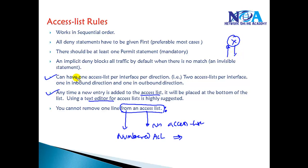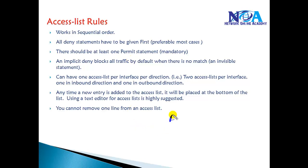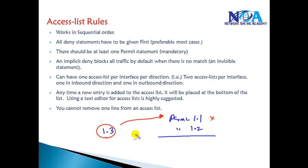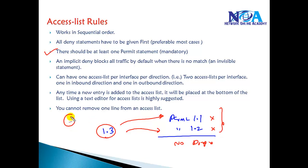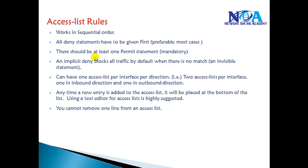We can have only two ACLs per interface — one applied inbound and one outbound. There is also the rule of implicit deny: if no statement matches a packet, it is dropped by default. For example, if only permit 1.1 and permit 1.2 are defined and a packet from 1.3 arrives, it matches nothing and is denied by this invisible implicit deny statement. So: at least one permit is required, deny statements are preferable first but not always, and ACLs work in sequential order.